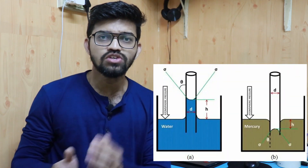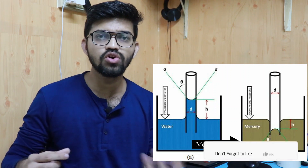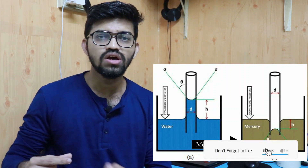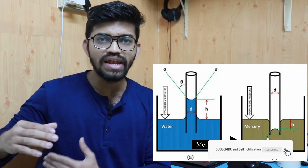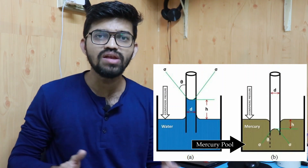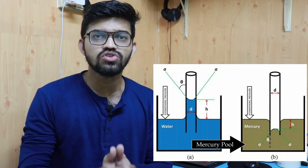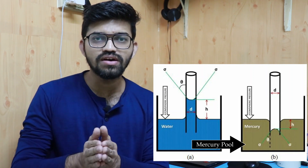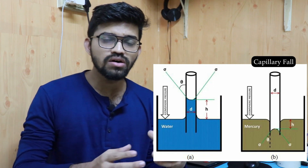On the other hand, if we insert that glass tube into the mercury pool, the mercury molecules will not enter the glass tube. The level of mercury inside the glass tube will be less than the adjacent level in the pool. That is nothing but the effect of capillary fall.